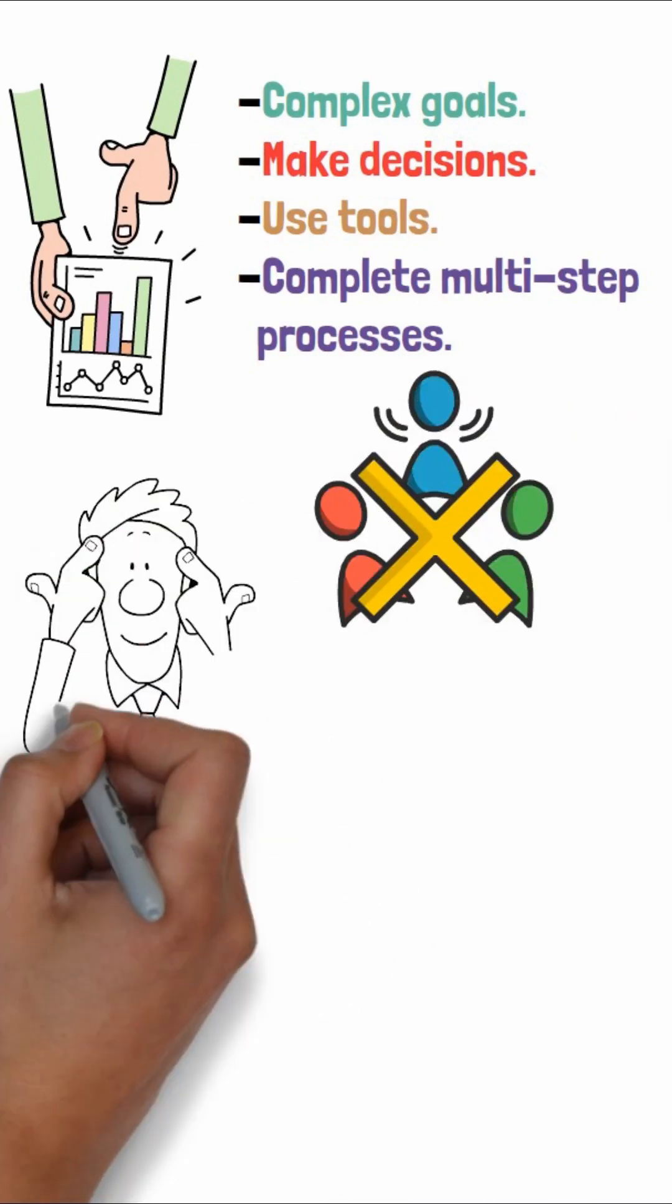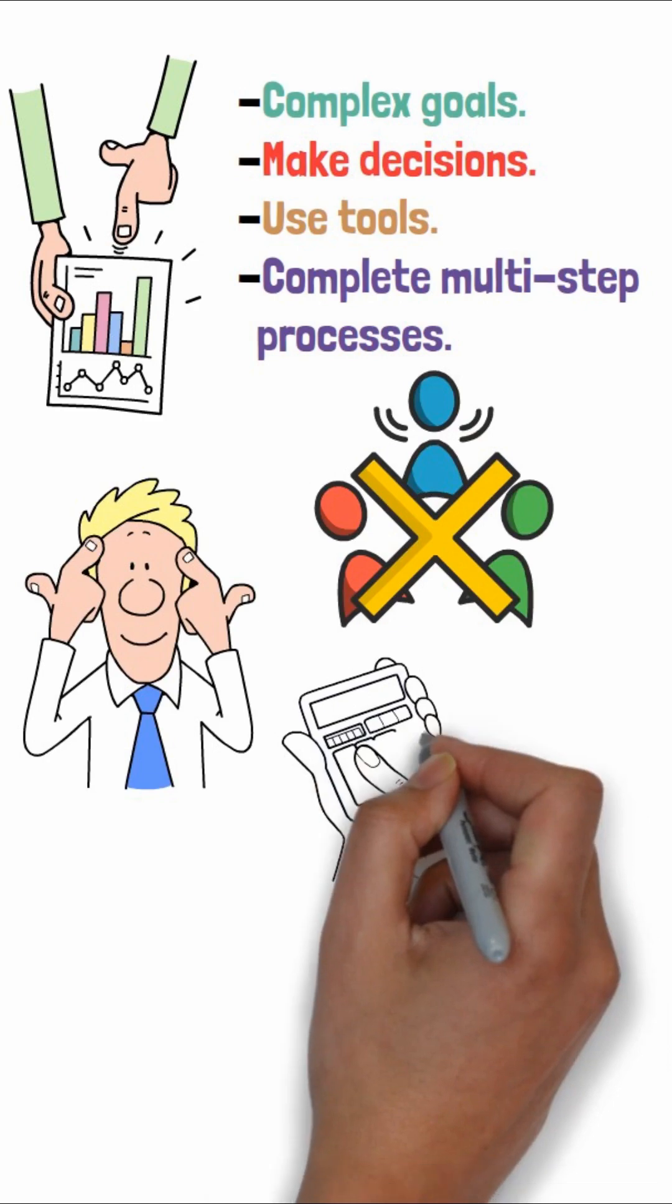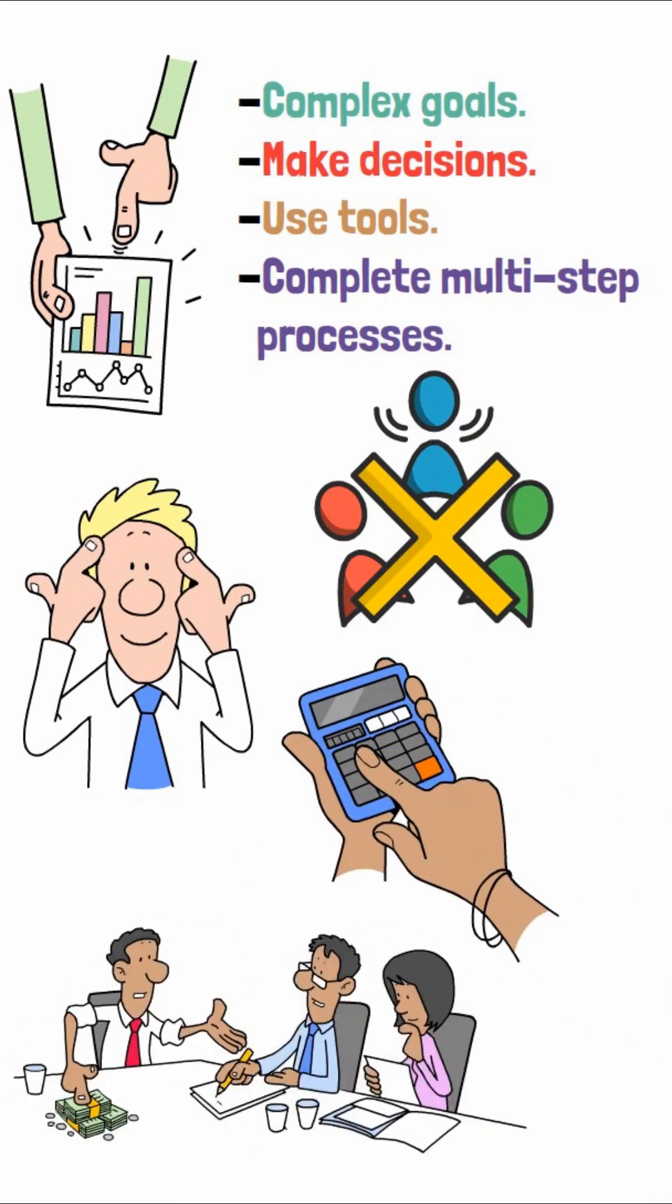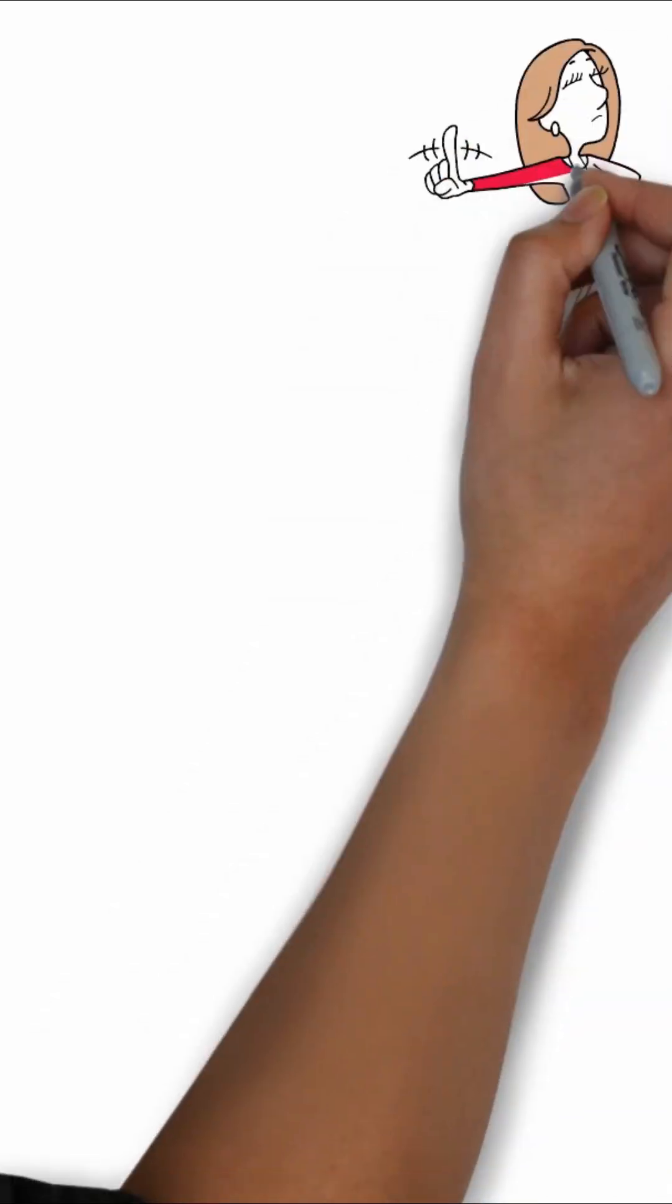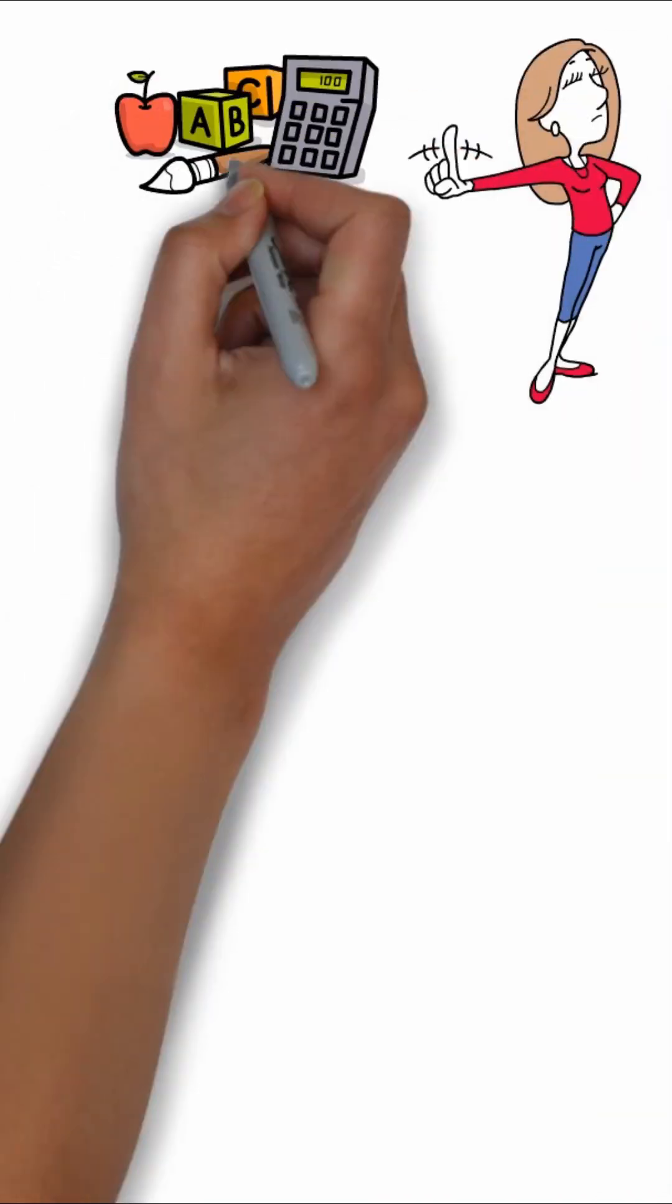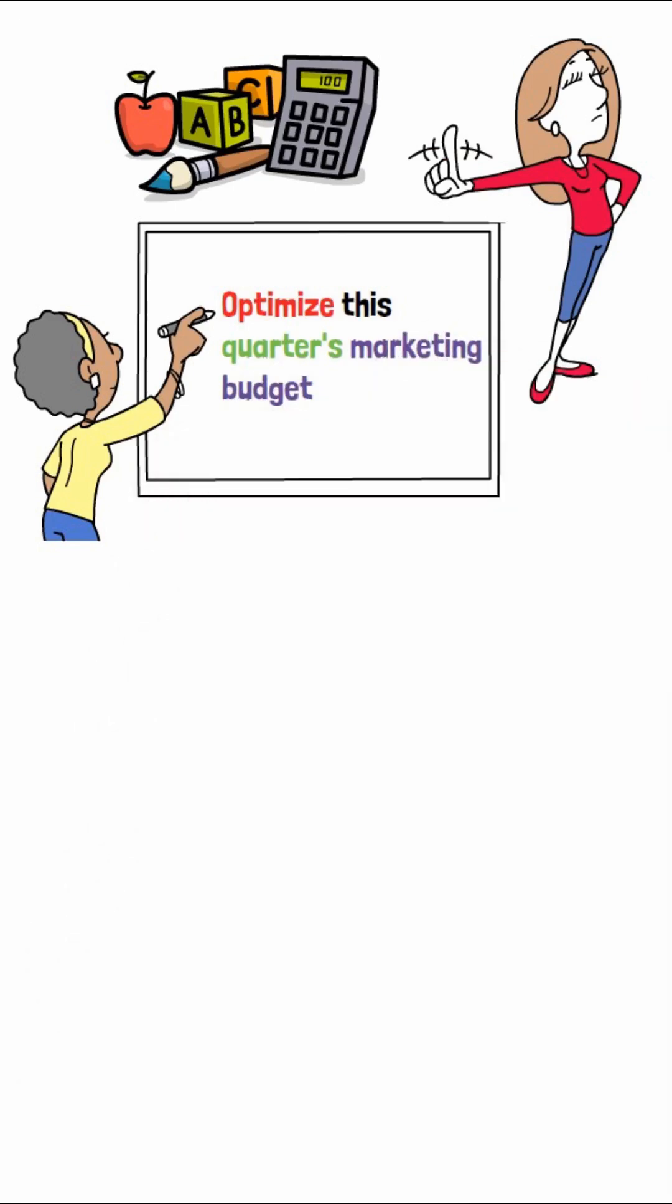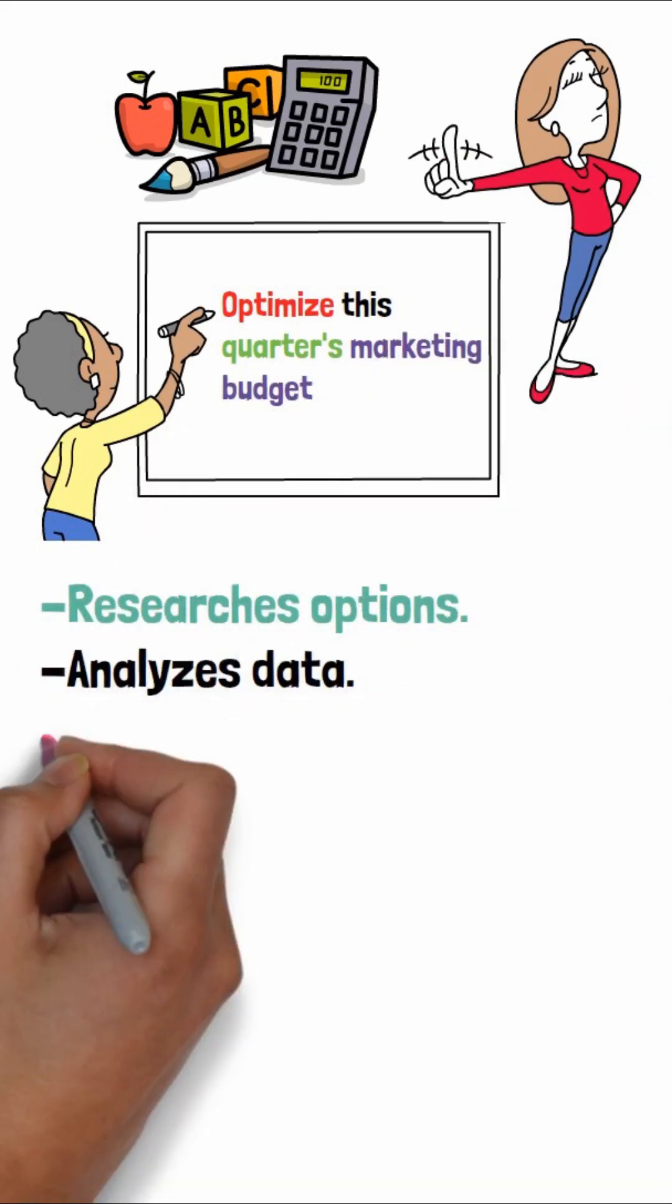Think of it like this. If traditional AI is a powerful calculator, Agentic AI is your entire finance department. You don't tell it every calculation to make. You give it a goal, like optimize this quarter's marketing budget, and it researches options, analyzes data,